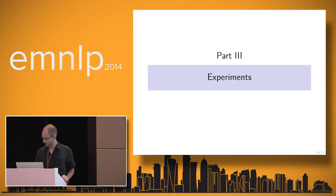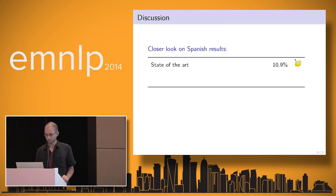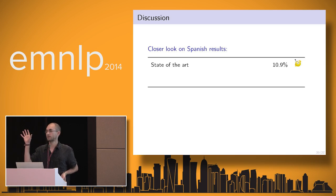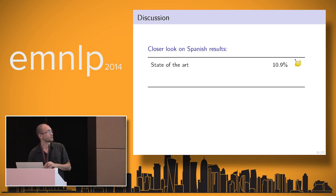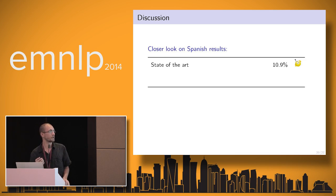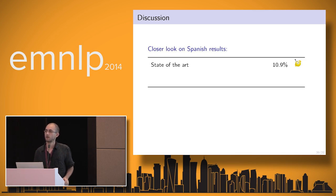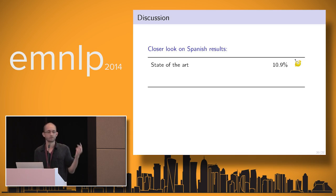Let's turn to the experiments. We experiment on ten different languages from different families, always using English as the source language. The languages we have are not really under-resourced, but at least we can compare with previous work. We use Europarl as the parallel corpus, and for labeled test data we use the freely available universal dependency treebank, which also has tags in the universal tagset we need. We use a standard feature set.